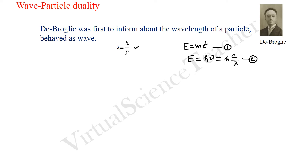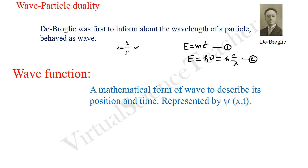In quantum mechanics, a particle can also be described as a wave, and the wave must have a mathematical form to describe its properties. This is called the wave function. The wave function is a mathematical form of a wave to describe its position and time, and it is represented by ψ(x, t). ψ is the usual notation. You may use any other notation. x and t indicate the position and time.